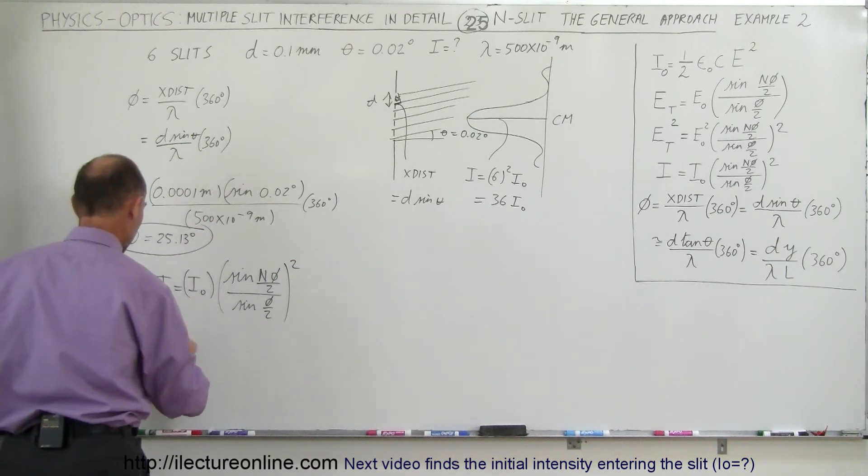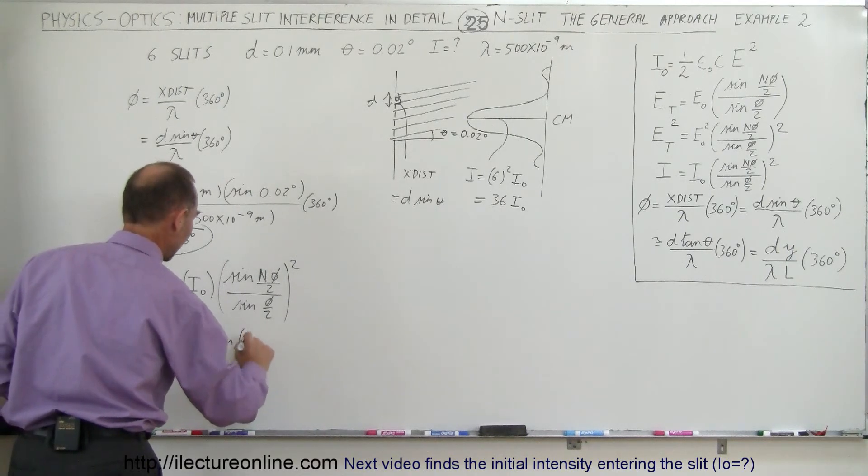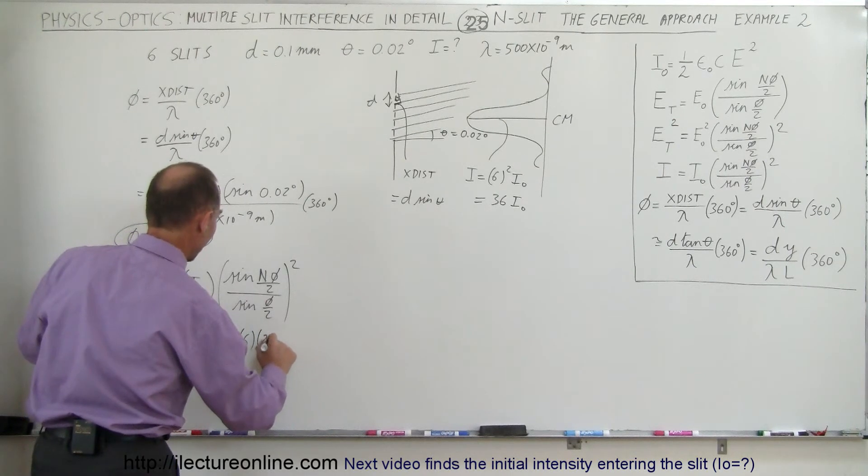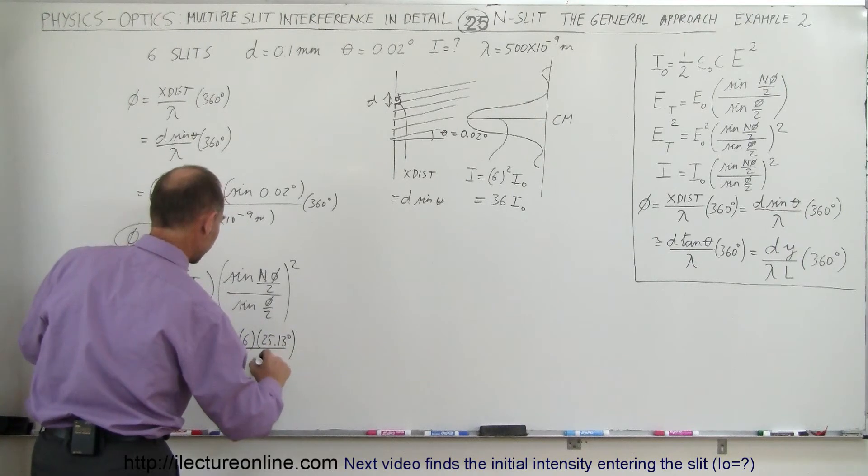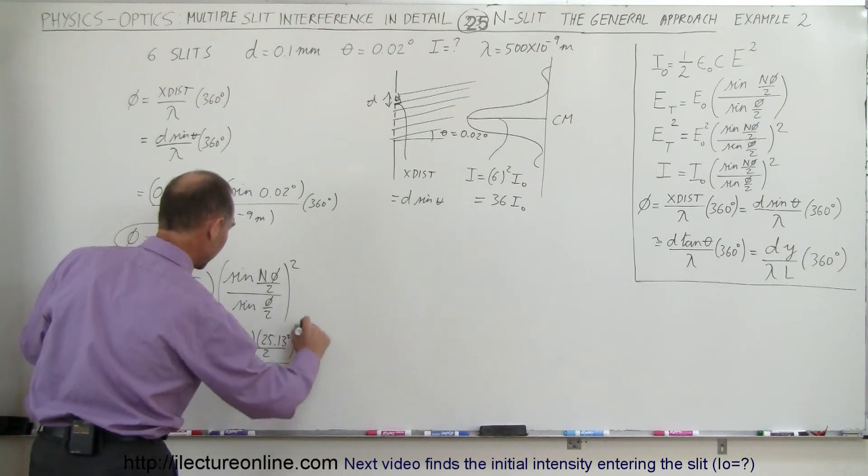So I is equal to I₀ times the sine of 6 times, because there are 6 slits, the phase angle, 25.13 degrees, the whole thing divided by 2, divided by the sine of 25.13 degrees divided by 2, and the whole thing squared.